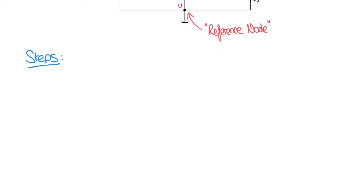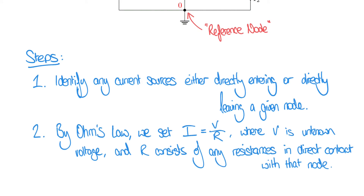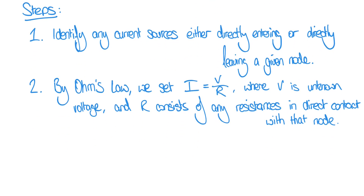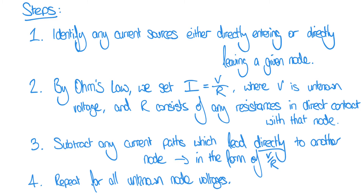We're going to follow these steps. First, identify any current sources either directly entering or directly leaving a given node. Second, by Ohm's law, set this current equal to V over R, where V is that node's unknown voltage and R consists of any resistances in direct contact with that node. Third, subtract from this any paths which lead directly to another node, again expressed in the form V over R. Fourth, repeat this for all unknown node voltages.